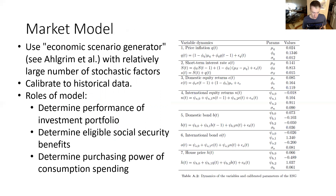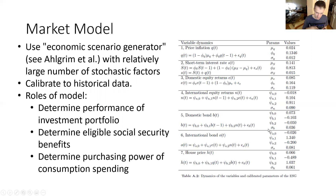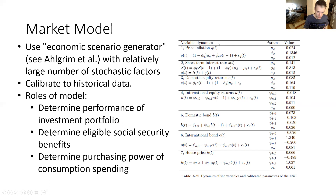For their market model, they use what they call an economic scenario generator, resembling a classical financial model but with many more assets and stochastic factors than a traditional financial model. It includes inflation, short-term interest rates, equity returns, international equity returns, bond prices (domestic and international), and house prices. Parameters are calibrated to historical data. The model is used to determine the retiree's investment portfolio performance, calculate eligibility for social security benefits, and compute the purchasing power of the retiree's consumption spending.